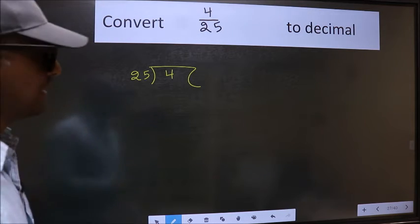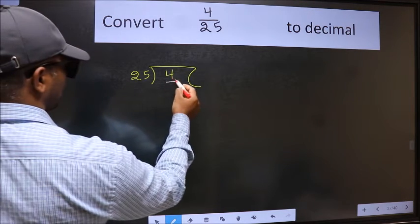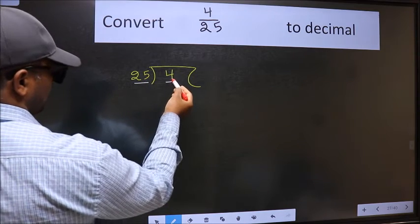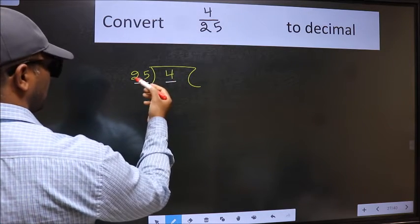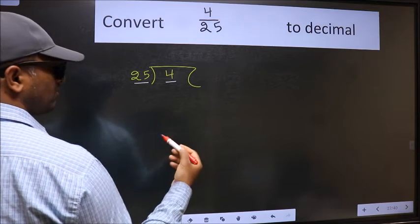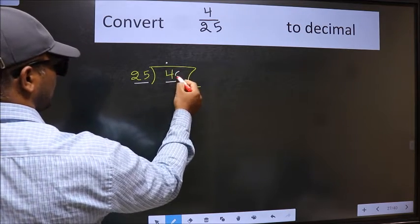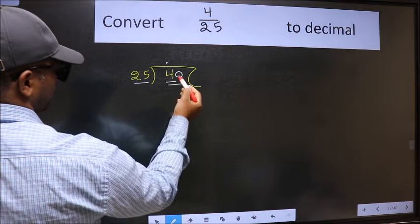Next, here we have 4 and here 25. 4 is smaller than 25. So what we should do is we should put a dot and take 0. So 40.